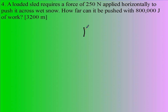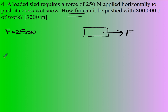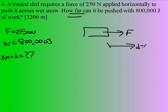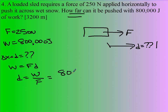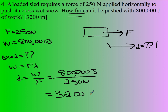A loaded sled requires a force of 250 newtons applied horizontally to push it across wet snow. How far can it be pushed with 800,000 joules of work? So I'm looking for delta x, or D. Work equals F times D, so D equals work divided by the applied force. The work is 800,000 joules divided by 250 newtons, giving a displacement of 3,200 meters.